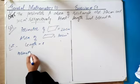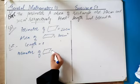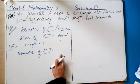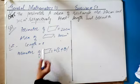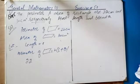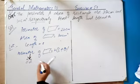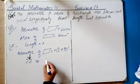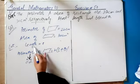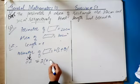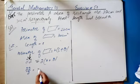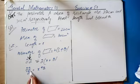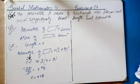Now, perimeter is given, so we use the formula: perimeter of rectangle = 2 × (length + breadth). Perimeter is given as 22, so we put 22 = 2 × (x + B). Dividing both sides by 2: x + B = 11.